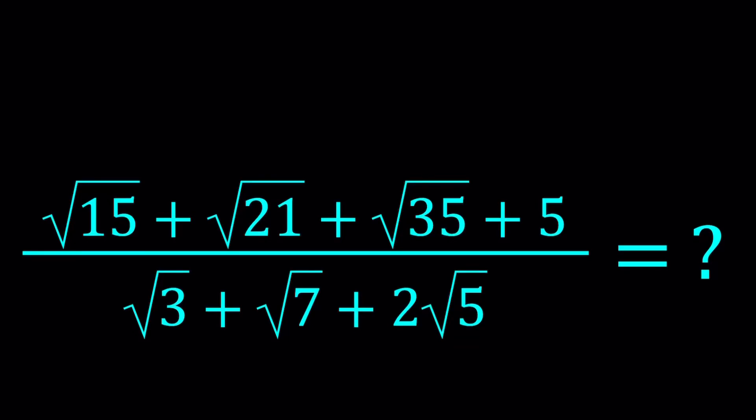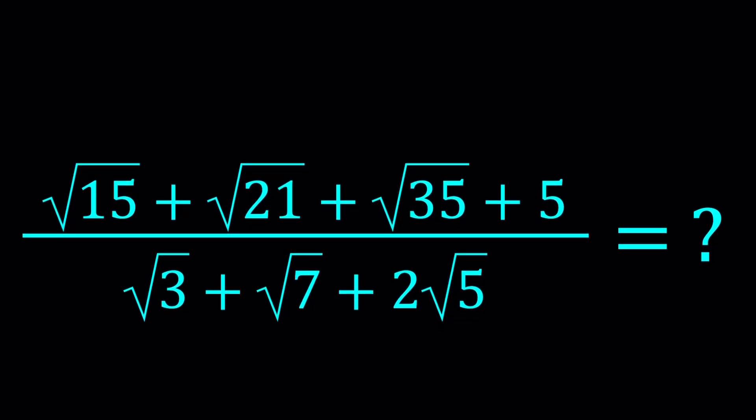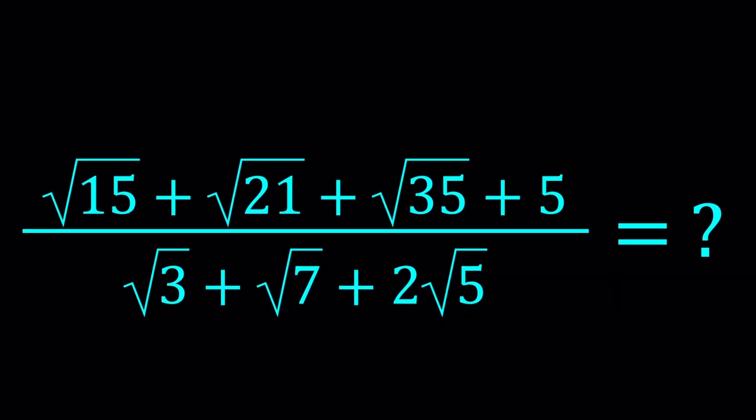Hello everyone. In this video we're going to be simplifying a radical expression. We have square root of 15 plus the square root of 21 plus the square root of 35 plus 5, and all of that is divided by root 3 plus root 7 plus 2 root 5.